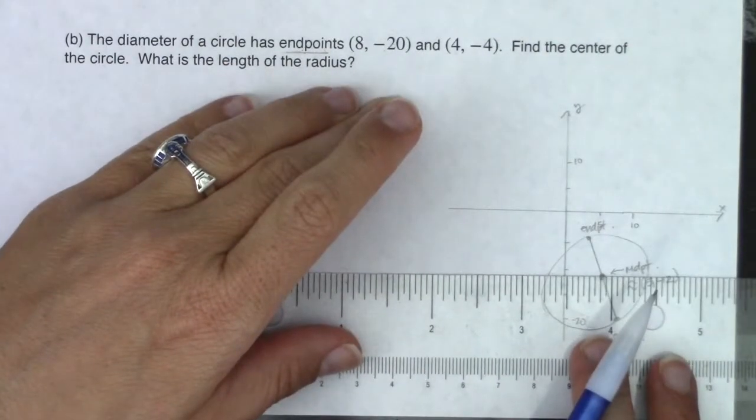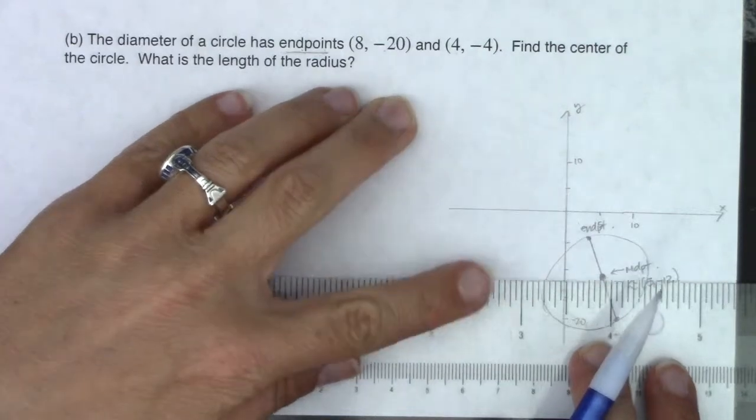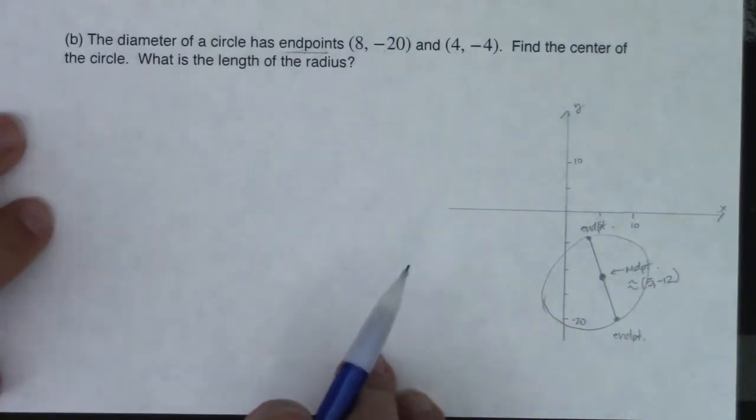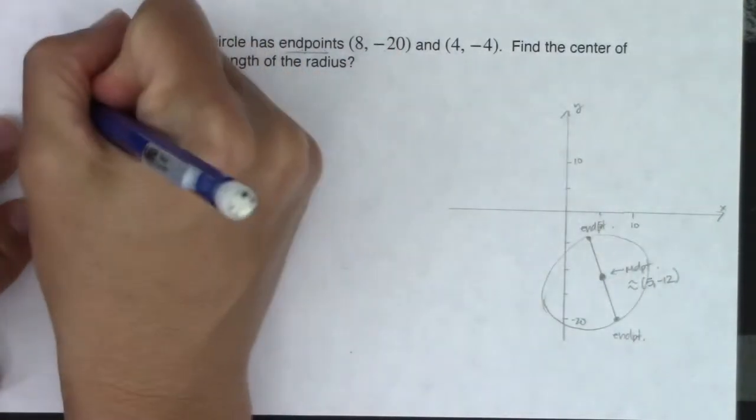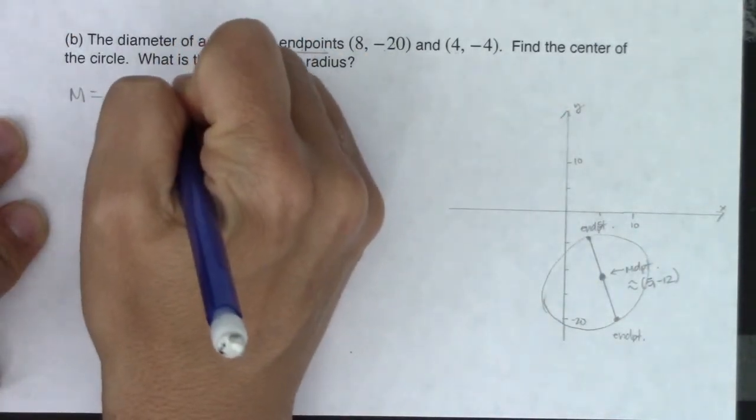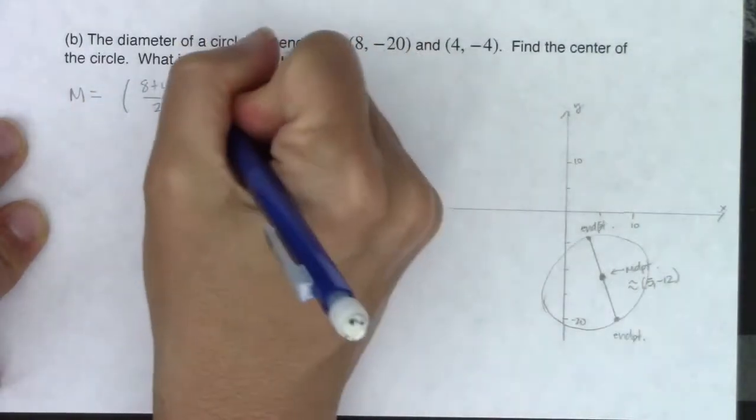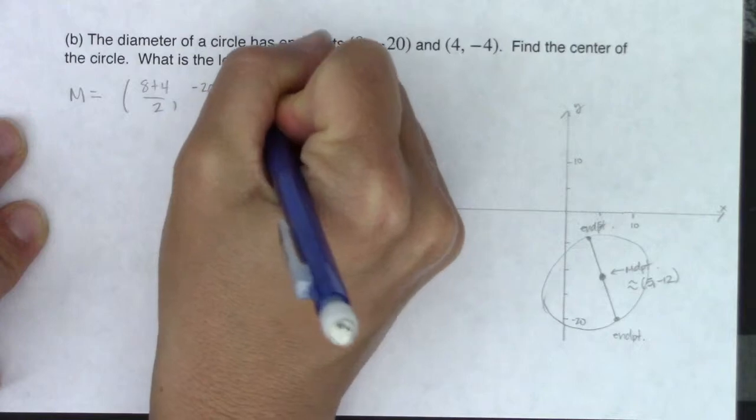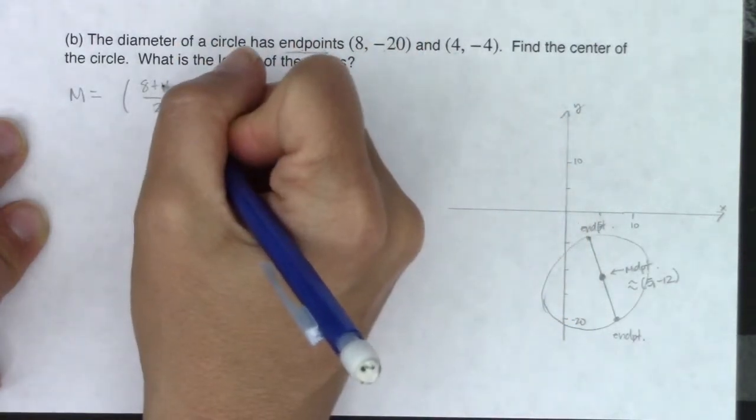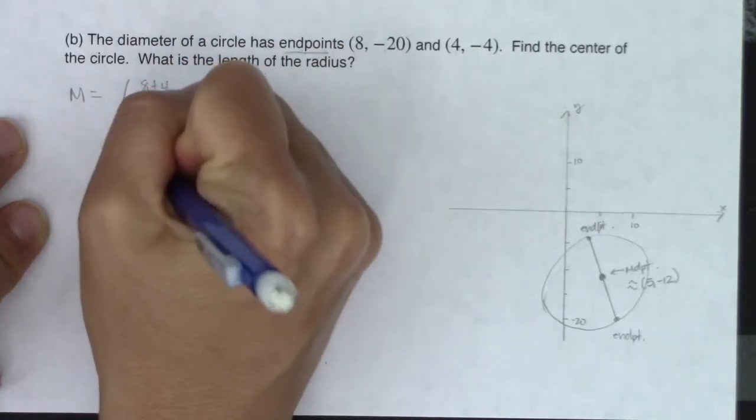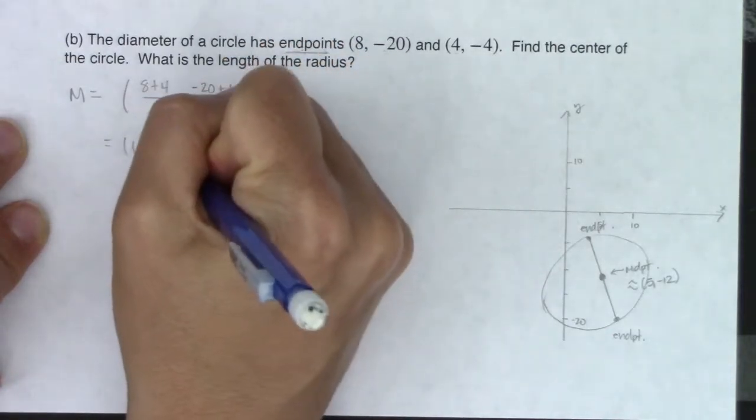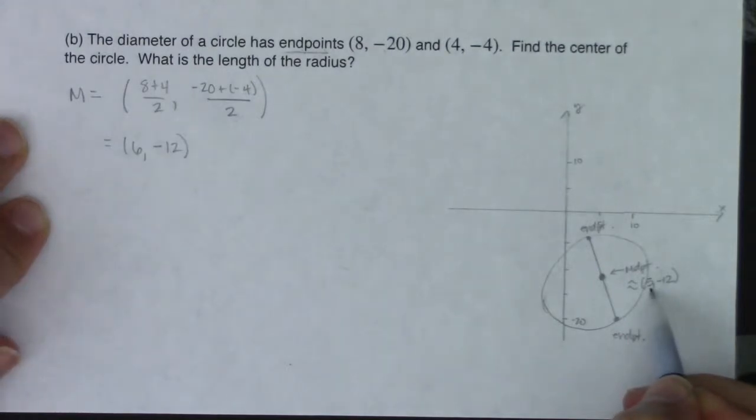So I'm going to guess this is about 5, negative 12. And I say 5 because it looks like it's lining up pretty good there. And then negative 12 because it's not quite negative 15 or negative 10. Negative 12 seems like a pretty good guess. So let's see if we can figure this out. So I want to find the center, which means I really want to just find the midpoint. So I'm going to take the average of the x coordinates. So we've got 8 plus 4 over 2. And then I'm going to average the y coordinates, negative 20 plus negative 4 over 2.